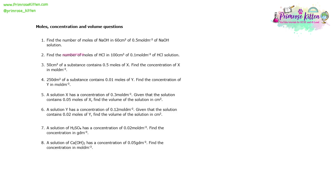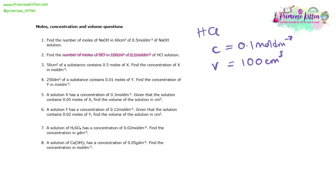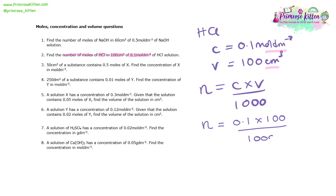Question two: we're asked to find the number of moles of HCl in 100 centimetres cubed of 0.1 moles per decimetre cubed HCl solution. The concentration is 0.1 mol/dm³ and the volume is 100 cm³. Again the units are inconsistent, so we use moles = C × V / 1000, giving us 0.1 × 100 / 1000 = 0.01 moles.